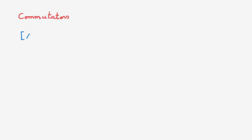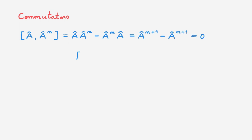We're next going to look at commutators of functions of operators. Since functions of operators are defined through their power series, we first consider commutators between powers of operators. The first case is trivial: the commutator of an operator A with any power of A. Writing it out and collecting the powers, we get zero. This means the commutator of A with any function of A is equal to zero.